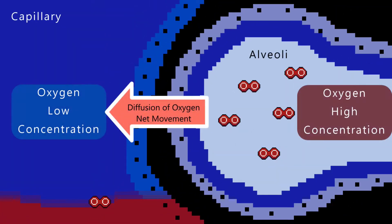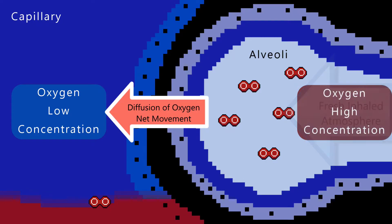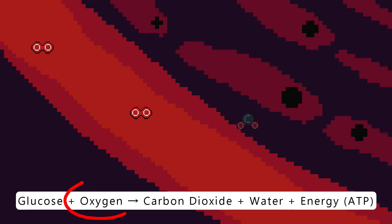Oxygen is always in a higher concentration in the alveoli because it is always receiving fresh atmosphere as we breathe. The deoxygenated blood will always have a lower concentration of oxygen compared to the alveoli because the cells have been aerobically respiring and using up the oxygen.